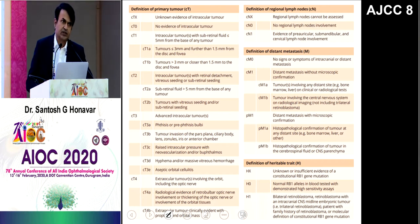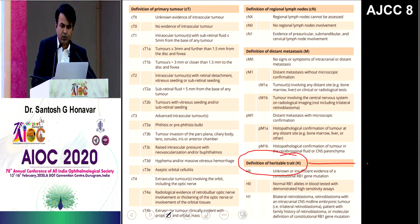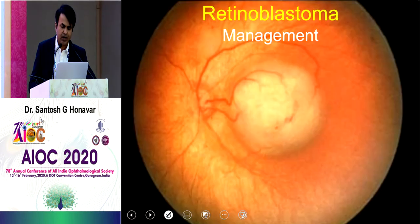What's new is the AJCC classification, which has been asked in DNB exams. It's difficult to remember, but you should reproduce the gross part of it. The most important point is that retinoblastoma is the only malignancy where an H category has been added — so it is TNM-H. H stands for hereditary: if a child has hereditary retinoblastoma, that is recorded as H1; non-hereditary is H0.